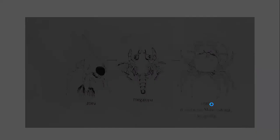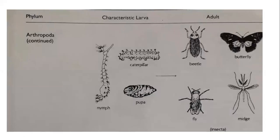In arthropods, particularly insects, there are different types of metamorphosis. Insects have egg, larva, pupa, and adult stages. The types of insect metamorphosis are holometabolous, hemimetabolous, and ametabolous. In holometabolous insects like butterfly, the larva is a caterpillar which then becomes a butterfly. The fly also undergoes this complete metamorphosis with a pupa and larval stage.